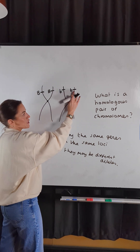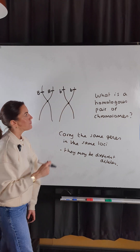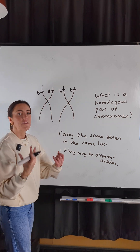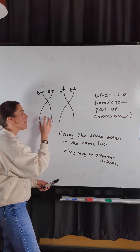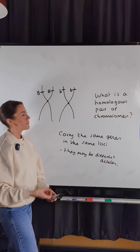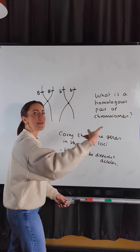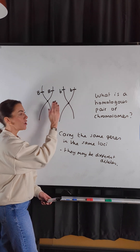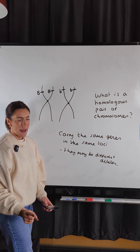The sister chromatids would be identical because they were made in DNA replication. So this allele will be the same as this allele. But in the pair itself, the alleles could be different, because this chromosome would have originally come from one parent — like the father — and this chromosome would have originally come from the other parent, the mother. So we could call them the paternal and the maternal chromosomes in the homologous pair.